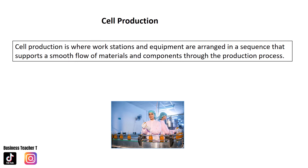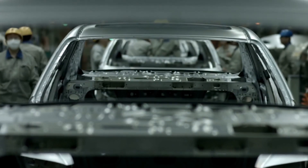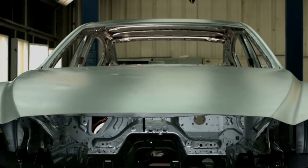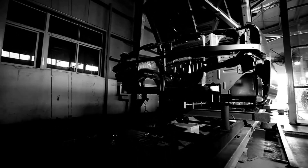Cell production, also known as cellular manufacturing, is a form of flow production. It involves dividing the workplace into cells and setting up a small production line or group working process so that products can be produced quite flexibly. Workers in a cell work as a team to achieve targets and ensure quality standards are met. An example is car manufacturing, where different teams have an input at different stages. There is a single flow, with workers in teams responsible for certain parts of the process.